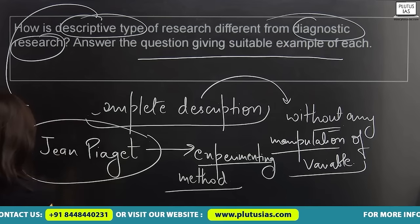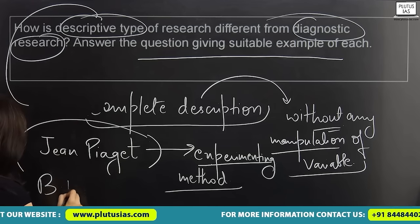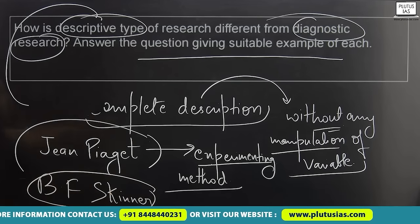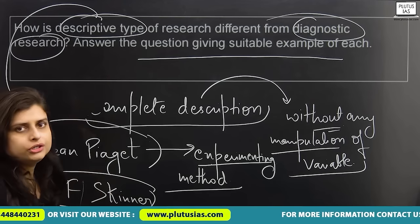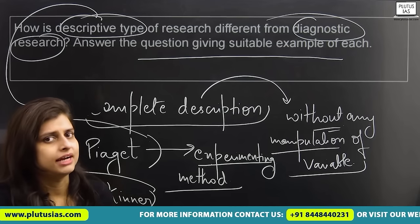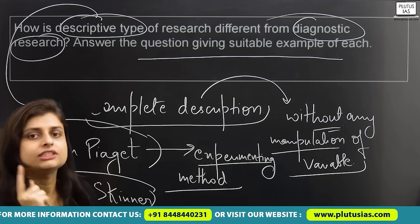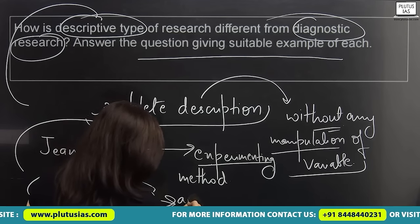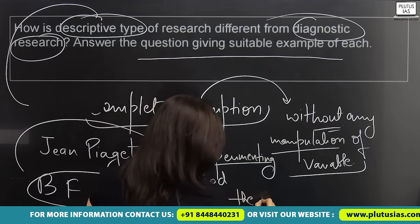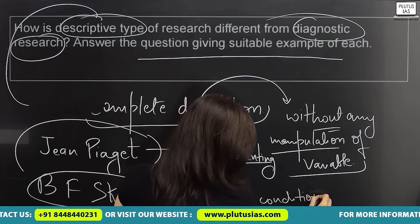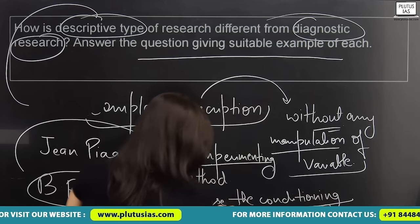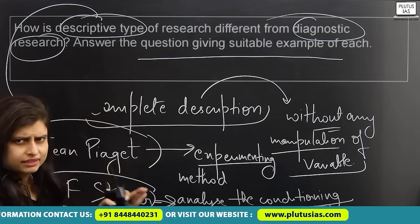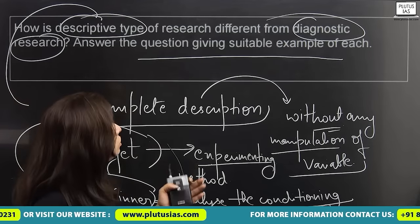You can also talk about another psychologist, B.F. Skinner. B.F. Skinner was of the opinion that in order to analyze the behavior of animals or humans, you need to experiment on conditioning. You can write many things about descriptive type research, but since the question carries 10 marks, you also need to write about diagnostic research.